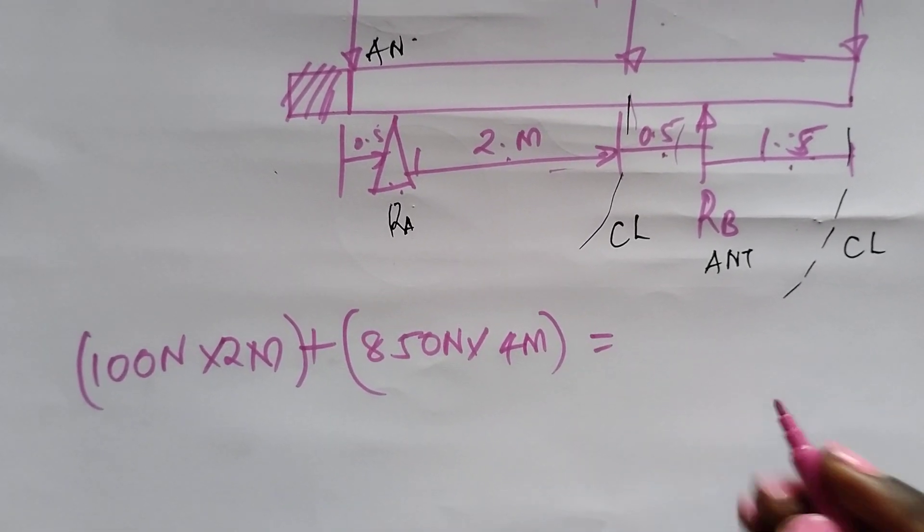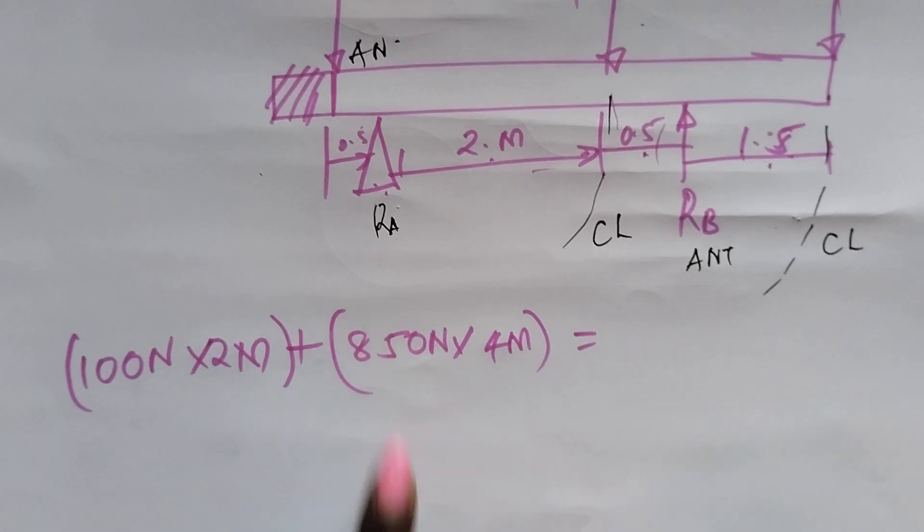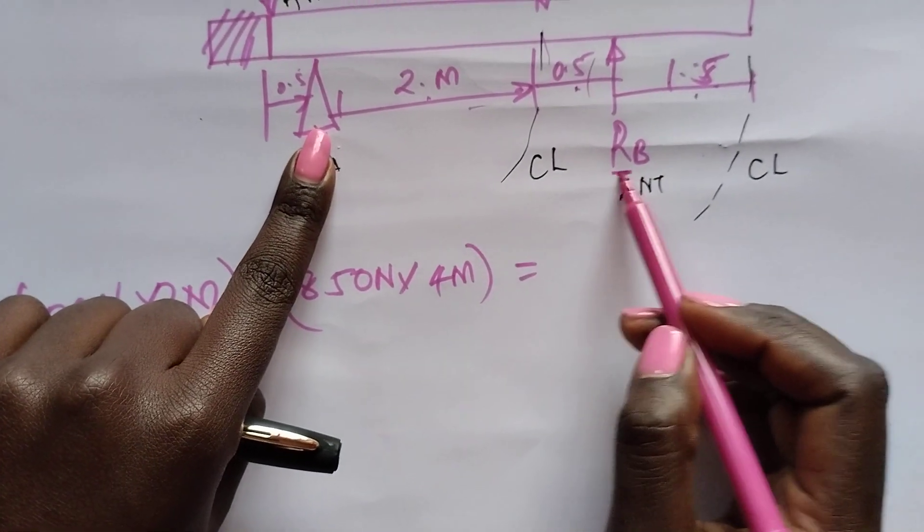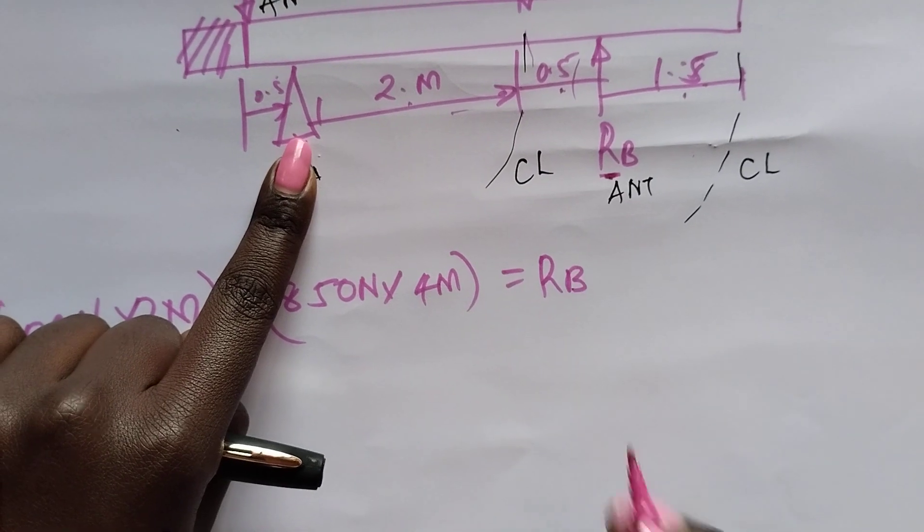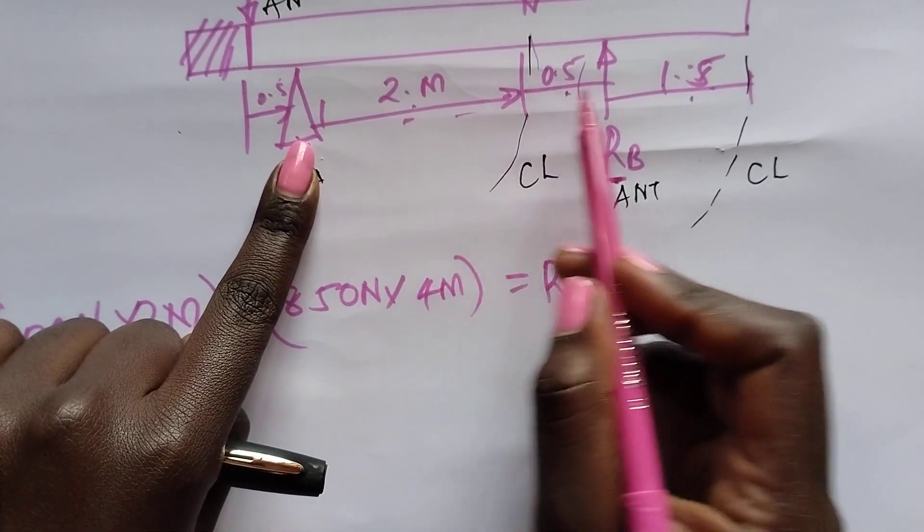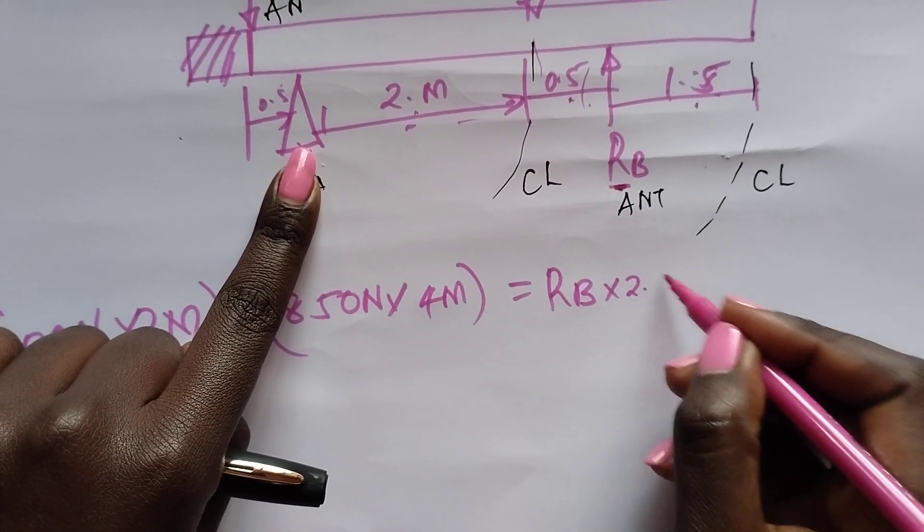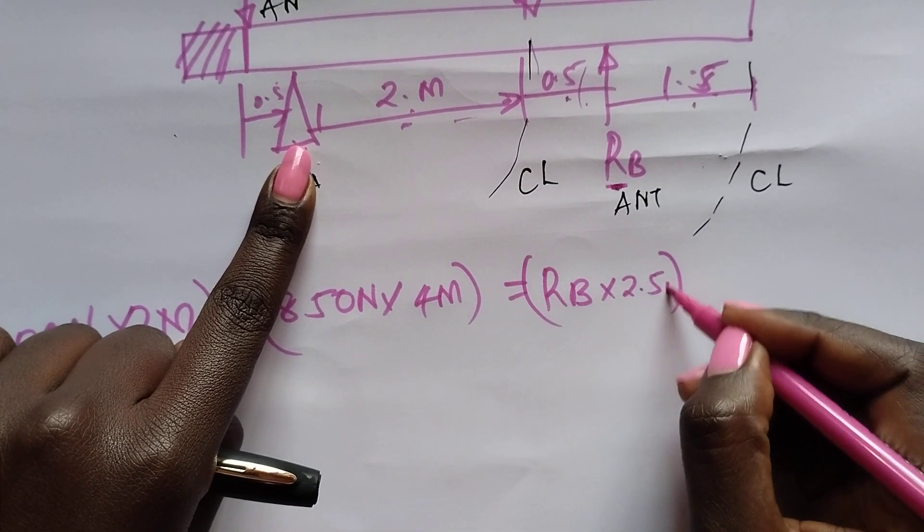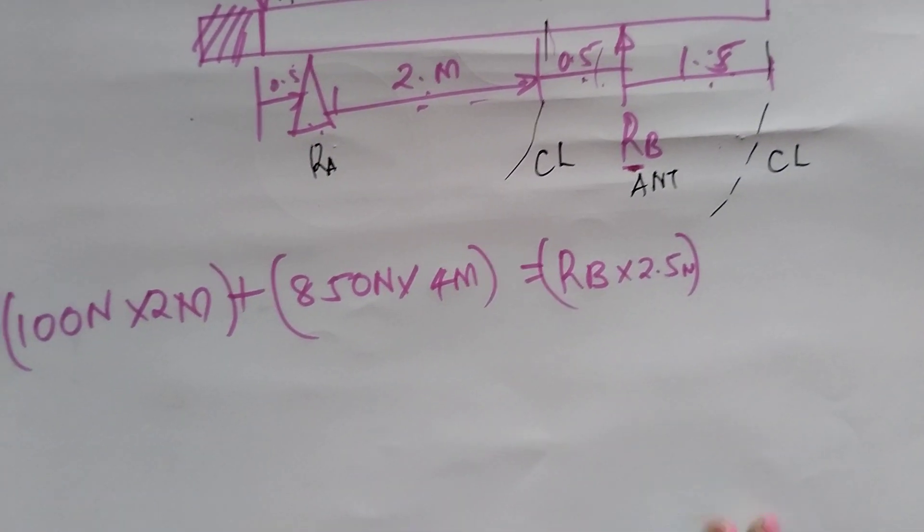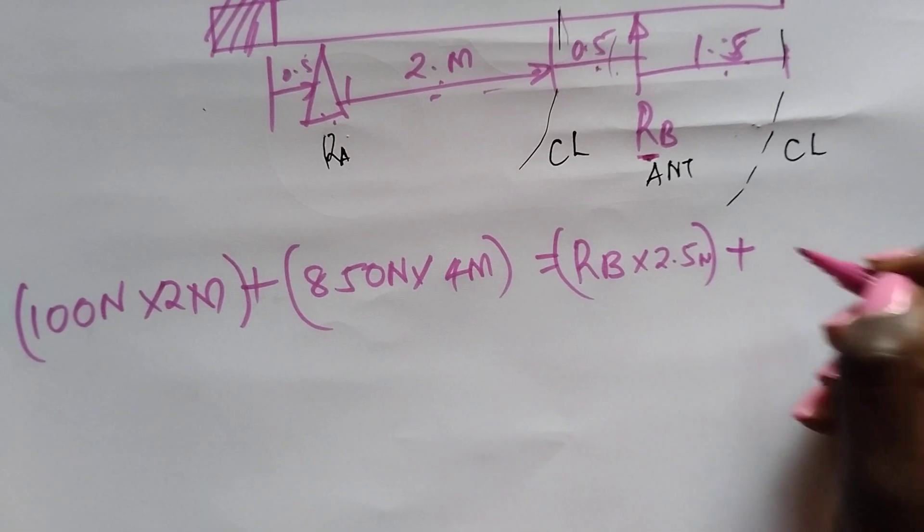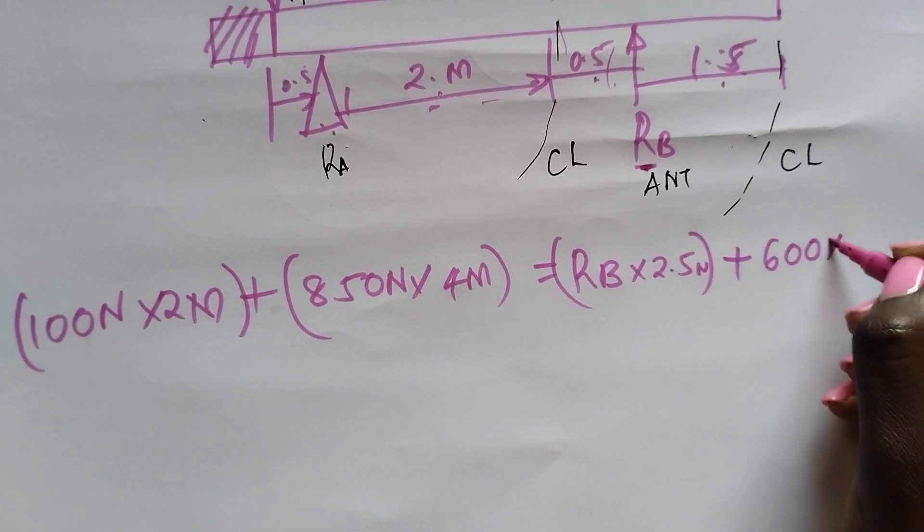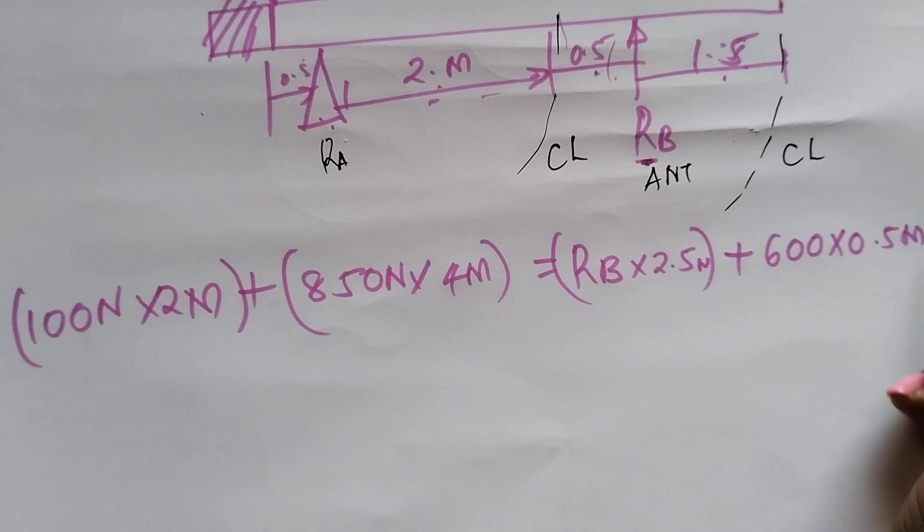Should be equal to the anticlockwise moment. The anticlockwise moment would now be reaction B, which is the unknown force, times the distance of 2.5. We also have a force of 600 newtons which is said it's going anticlockwise. So this is an addition of 600 and a distance of 0.5 meters.